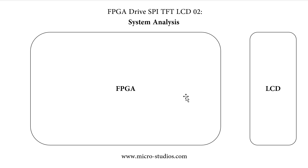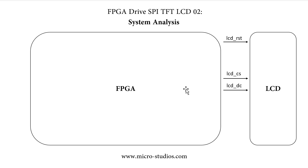The first signal will be the LCD reset signal. The FPGA uses this signal to reset the LCD. The next signal will be the CS signal — it's a chip select signal, so we use it to enable the LCD. The next signal is the data and command signal. The FPGA uses this signal to tell the LCD whether it is sending data or a command.